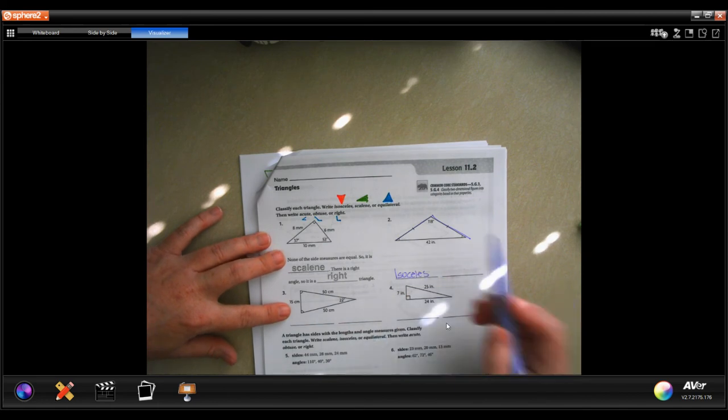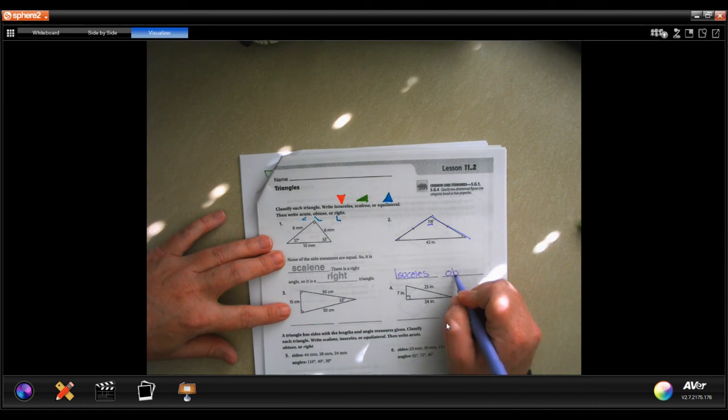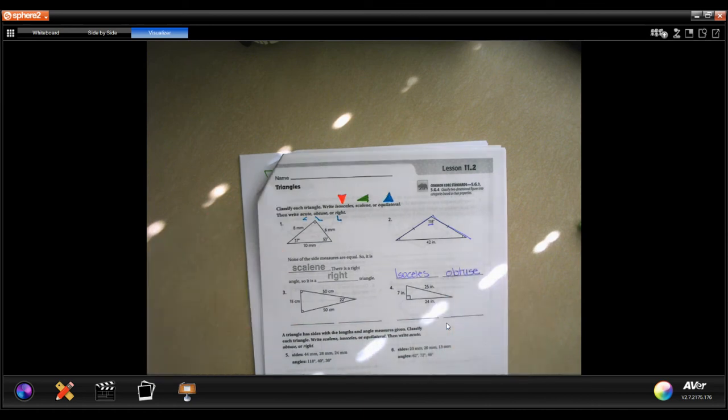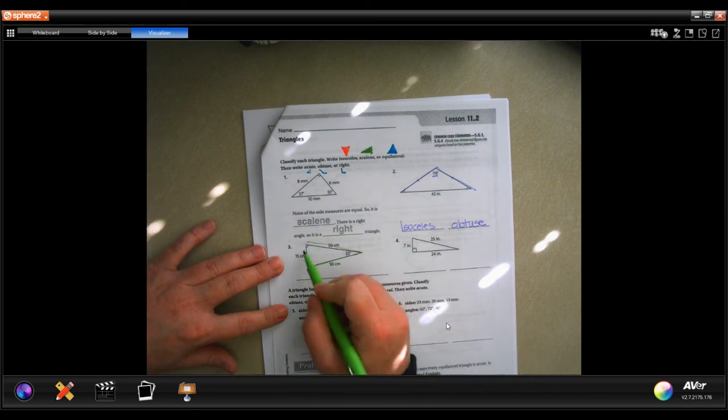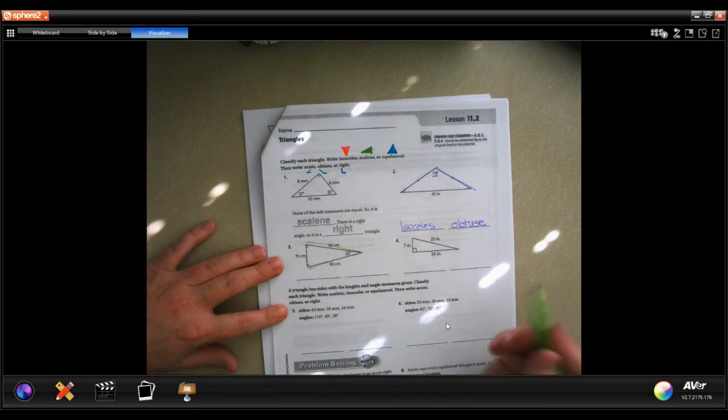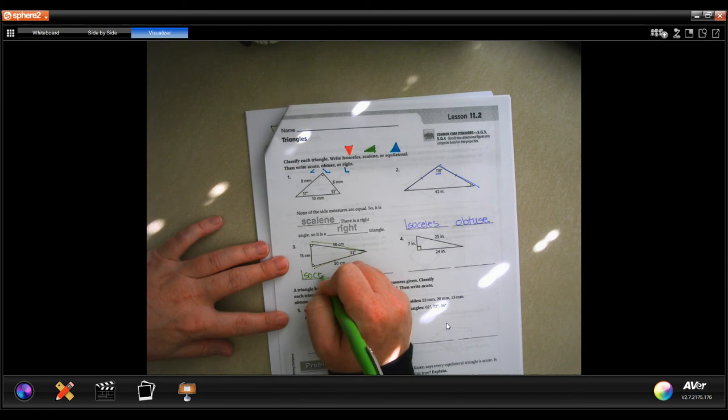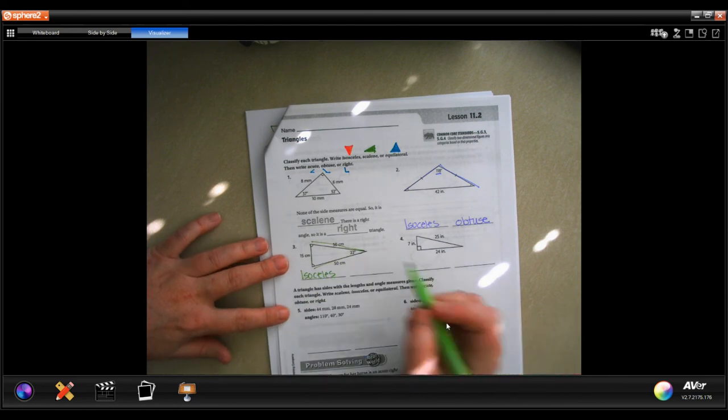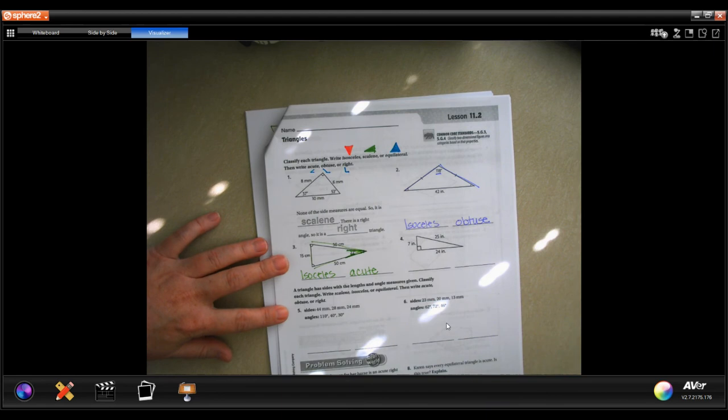You will also see that at 118 degrees it is larger than 90, which means it is obtuse. On the next one, it is again two of those sides are the same and it would look like an ice cream cone if you picked it upside down, which makes it isosceles. But the angle on this one is less than 90 degrees, which makes it acute. It's small, it's acute.